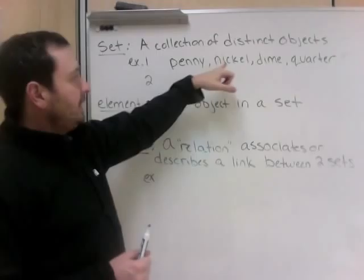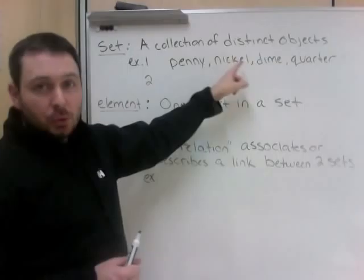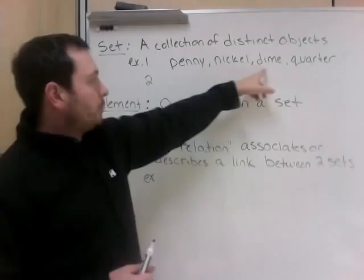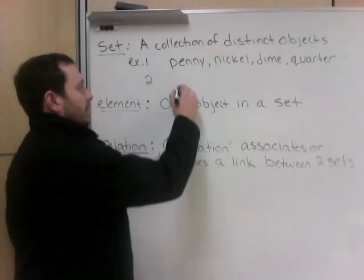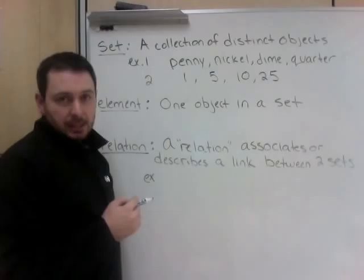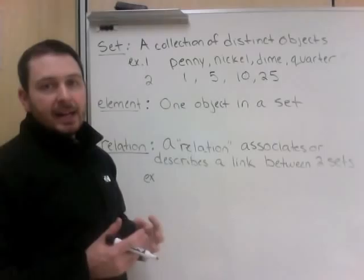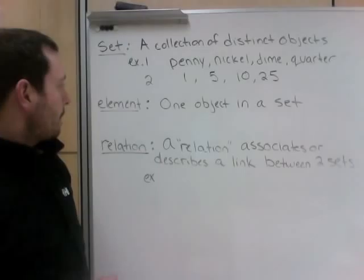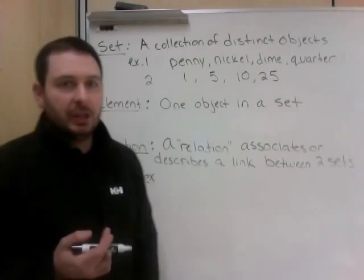Let's start by looking at some definitions. First, a set is a collection of distinct objects — each one is different. For example: penny, nickel, dime, quarter. We don't have penny twice because they must be distinct. Another example of a set would be 1, 5, 10, 25 — the values of each coin mentioned.